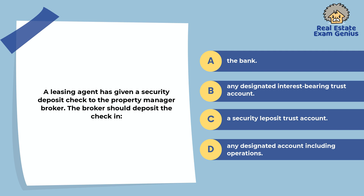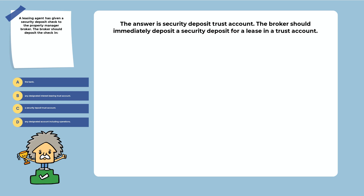A leasing agent has given a security deposit check to the property manager broker. The broker should deposit the check in: the bank, any designated interest-bearing trust account, a security deposit trust account, or any designated account including operations. The answer is a security deposit trust account. The broker should immediately deposit a security deposit for a lease in a trust account. The trust account should have no other funds and should be designated as a security deposit trust account. The amount of time allowed will vary by state law.